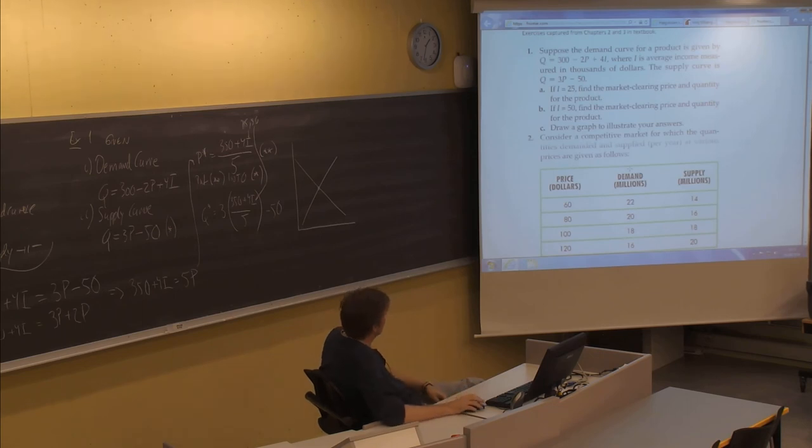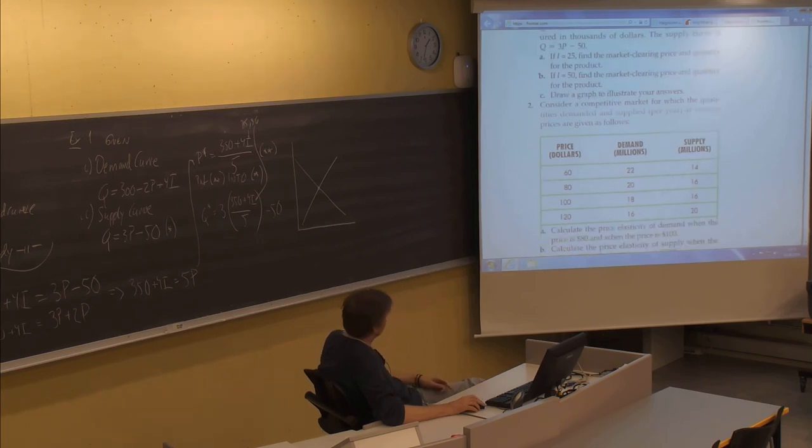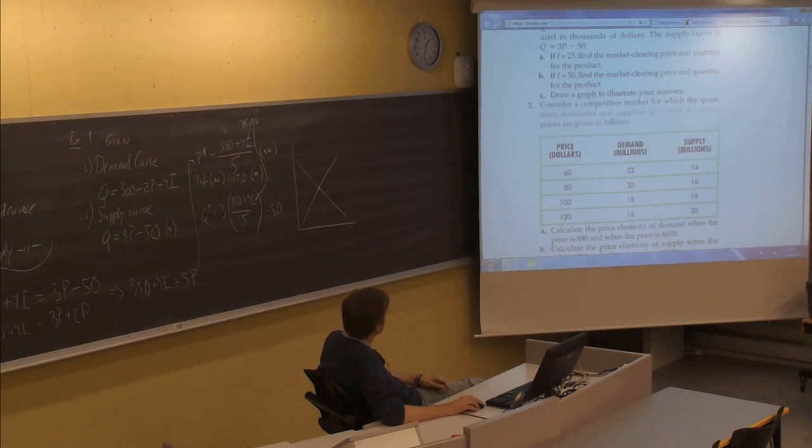It says here, consider a competitive market. That information tells us that we are still in a situation where this crossing between demand and supply means the solution to the market. For which the quantities demanded and supplied per year at various prices are given as follows. So instead of having the mathematical functional description, now we have a numerical description just by points. If the price is $60, then demand is 22 million and supply is 14 million. Then when price increases, you would expect demand to go down, which it does, and supply to go up, which is also does.